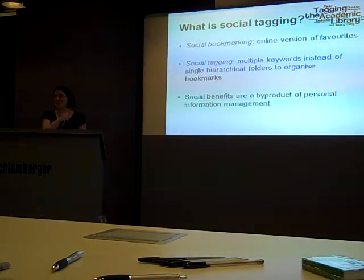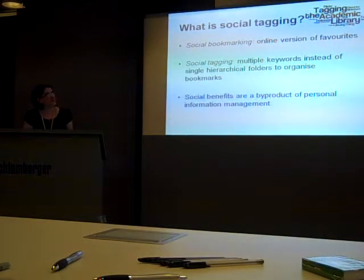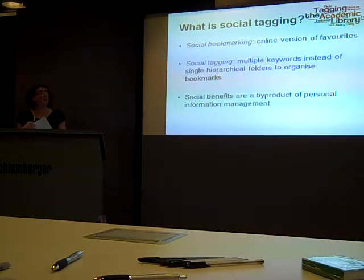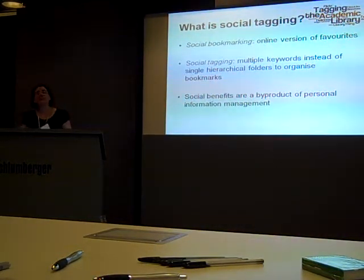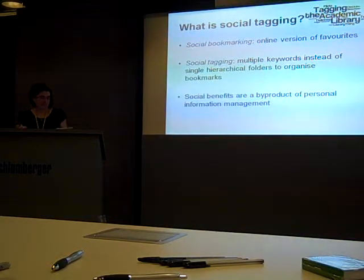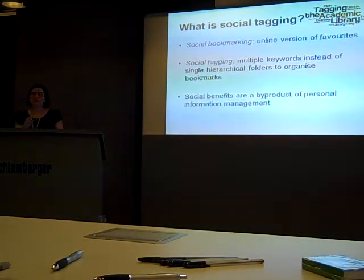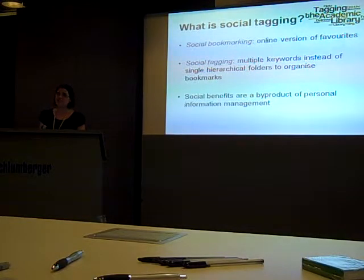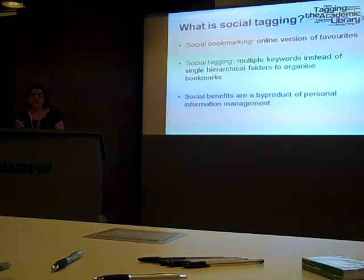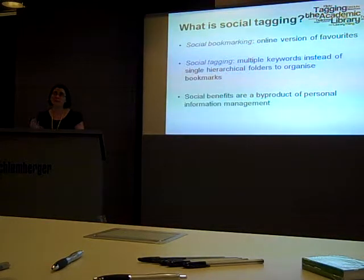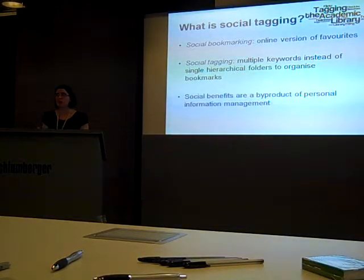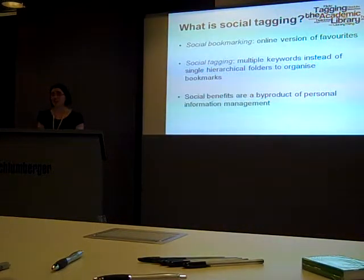So my first slide — for those of you who don't know what social tagging is, I'm going to explain that. Social bookmarking is basically two elements to it: it's an online version of your favourites, and instead of using single hierarchical folders to categorise your bookmarks, you assign multiple keywords or tags. Those tags then provide hyperlinks to a list of all the other items in the system that have been attributed that tag. So while people mainly use social tagging to organise and access their own stuff more easily, by making those bookmarks and tags public online they can be browsed by other people to find other items of interest and to find other people who share those interests.